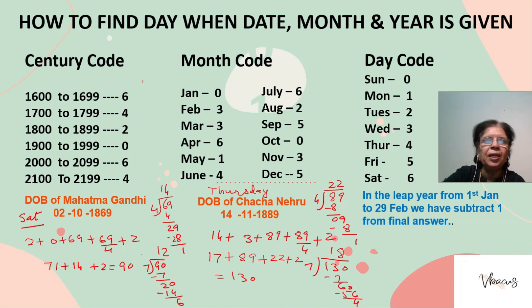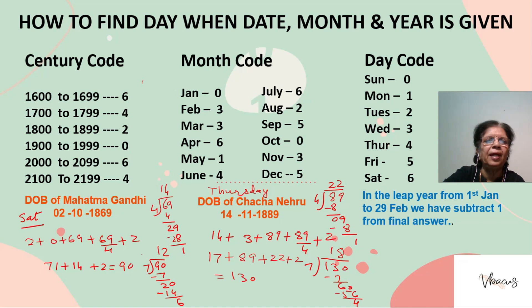Century code: from 1600 to 1699 the code is 6. From 1700 to 1799 the code is 4. From 1800 to 1899 the code is 2. From 1900 to 1999 the code is 0. From 2000 to 2099 the code is 6. From 2100 to 2199 the code is 4. We can learn these numbers as we learn a telephone number: 6-4-2-0-6-4.